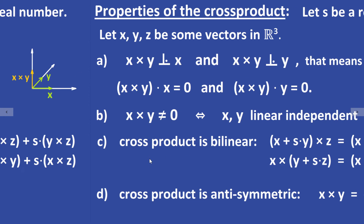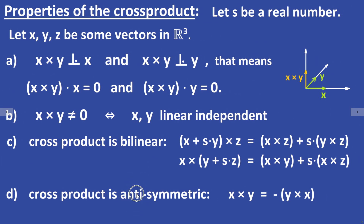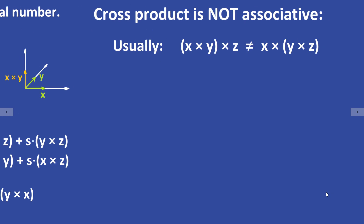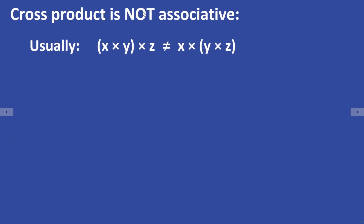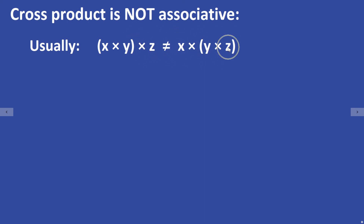The cross product is anti-symmetric, meaning X × Y = −(Y × X). The cross product is also not associative, so in general (X × Y) × Z is not equal to X × (Y × Z).